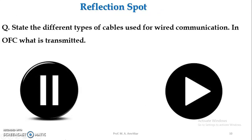This is all about wired communication medium. Let us pause and reflect: state the different types of cables used for wired communication, and in OFC what is transmitted? The different types of cables are twisted pair cable, coaxial cable, and fiber optic cable. In OFC, light is transmitted.